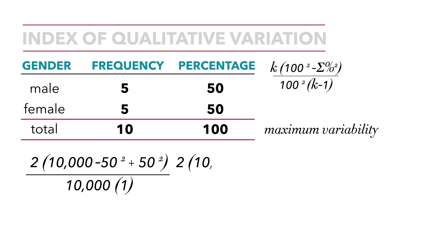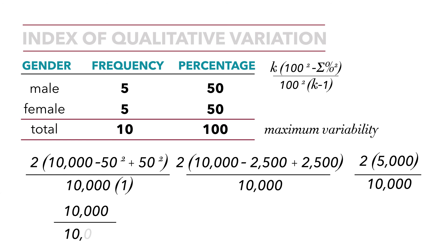We do the math. 2 times 10,000 minus 50 squared is 2,500 plus 50 squared is 2,500 over 10,000. That equals 10,000 minus 5,000, so we're left with 2 times 5,000 over 10,000, which equals 10,000 over 10,000, which equals 1.0. The index of qualitative variation in this case is 1.0. It represents the maximum amount of variability. And again, if you look at the table, you can see that variability.